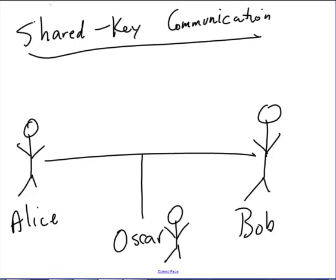In shared key communication, Alice and Bob meet face-to-face and agree on a key. That same key is used to encrypt and decrypt the message. If they're able to meet and agree on a key, their communication is actually quite secure. Shared key algorithms are very difficult to break. Oscar may be tapping into the wire or listening to Wi-Fi signals between Alice and Bob — he can pick up the data, but because it's encrypted and he doesn't have the key, he can't read what they're sending.